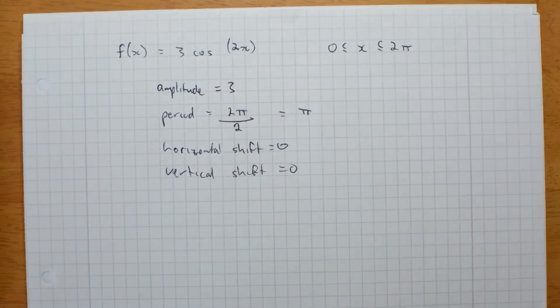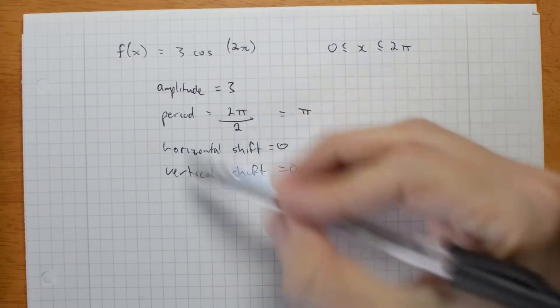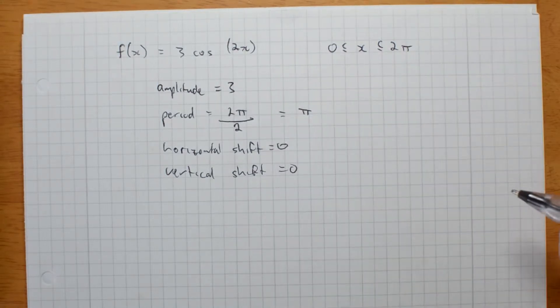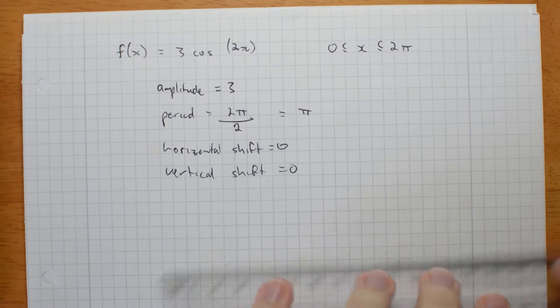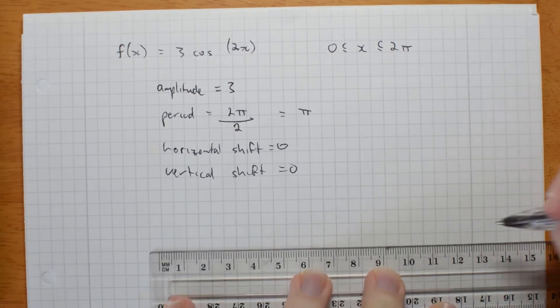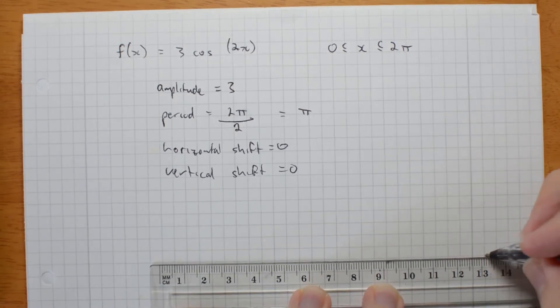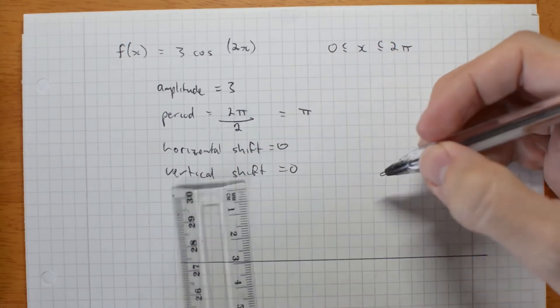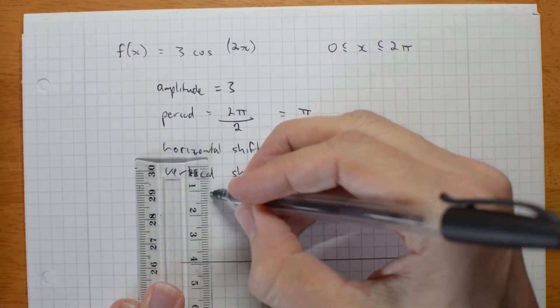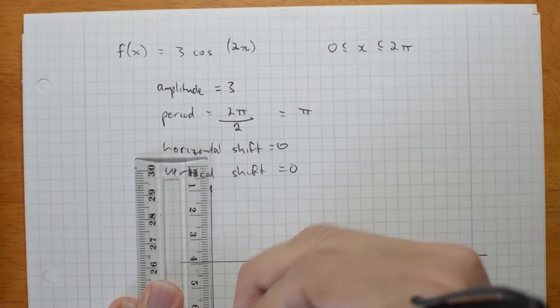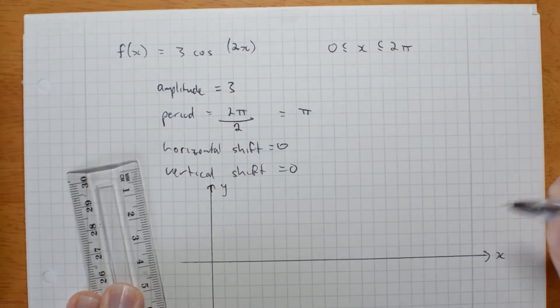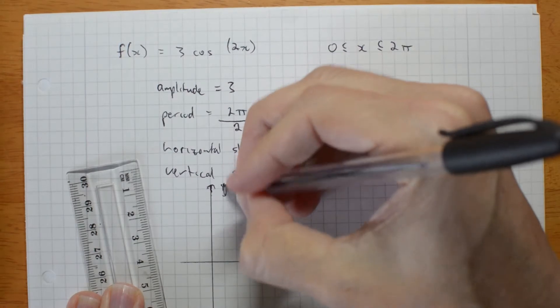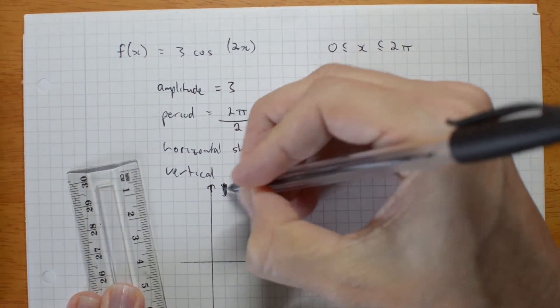So I've got to graph this function. Now I can straight away graph it if I want to. If I draw myself some axes, trying to decide where to put it. Here's my axes. We're going from 0 to 2pi, so let me put this axis here. y, x. Actually, this isn't y. This is f of x. Let me call it f of x instead.